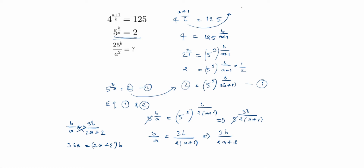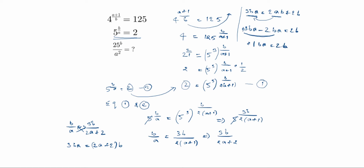After cross-multiplying: 3b by a equals 3b by 2a plus 2b. Then 2ab by a and 2b by a simplify — 3 minus 2 is 1, so plus 1 times b by a equals 2b. Since b and b cancel, we get a is equal to 2.